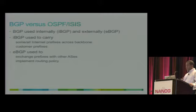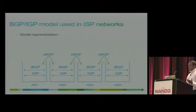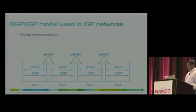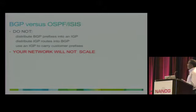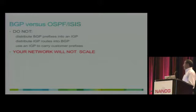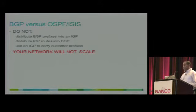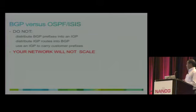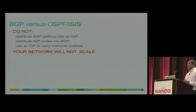EBGP is used to exchange prefixes with other ASs, and you also apply routing policies there. To review the model: you have IGP and IBGP within a network, and EBGP between networks. It's very important not to distribute BGP into IGP, and not to redistribute IGP into BGP. Do not use IGP to carry customer prefixes — it's very important to inject customer prefixes into BGP, to reduce the size of IGP and make it converge faster.